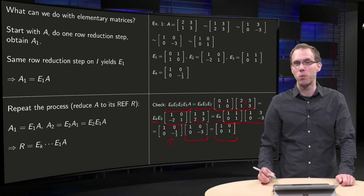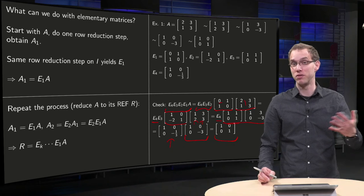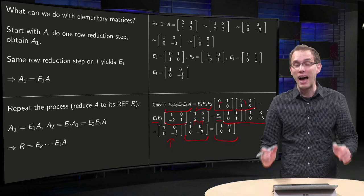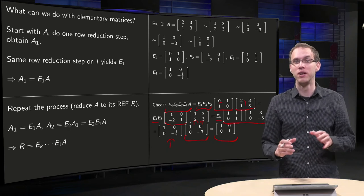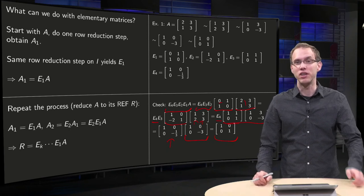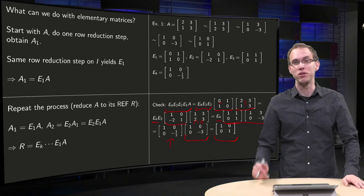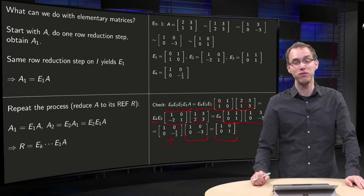You may wonder of course, but what's the use of this? Because we already had the row-reduced echelon form of A. That's what you will learn in later videos when we will start to move towards the inverse of matrices.